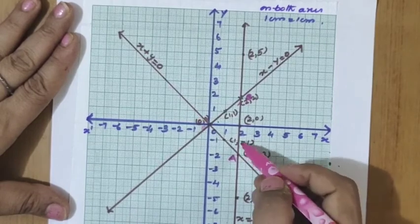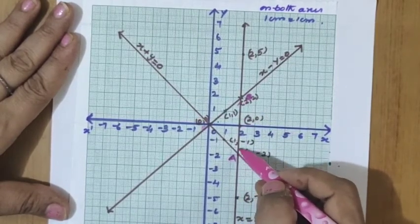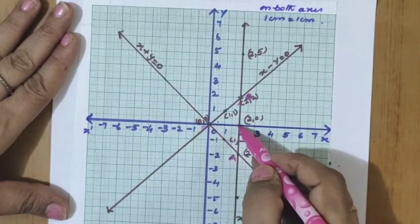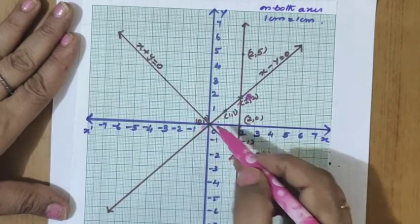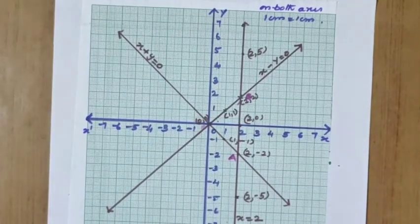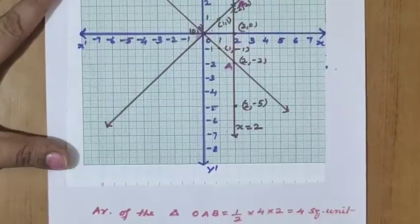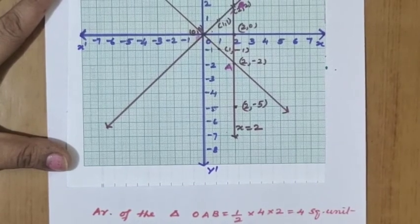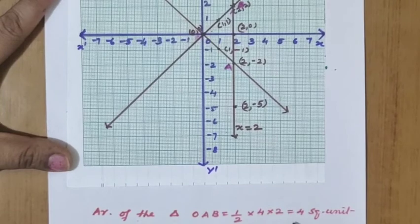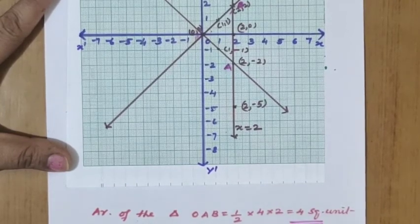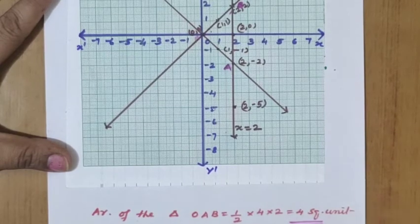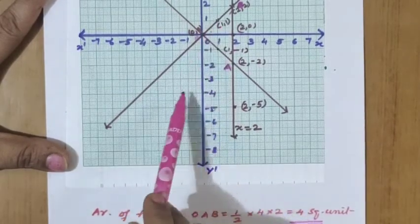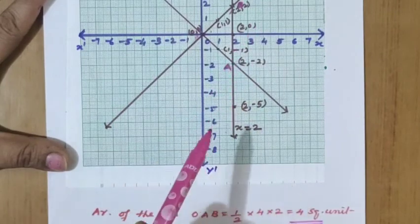To find the area of triangle OAB, we take AB as the base. Counting the units on the graph: 1, 2, 3, 4 — so the base is 4 units. The height is 2 units (the perpendicular from O to AB). Area of triangle OAB equals half into 4 into 2, which gives 4 square units. Draw neatly and label all the lines — marks are distributed accordingly in the marking scheme.